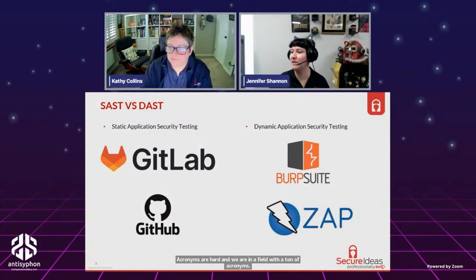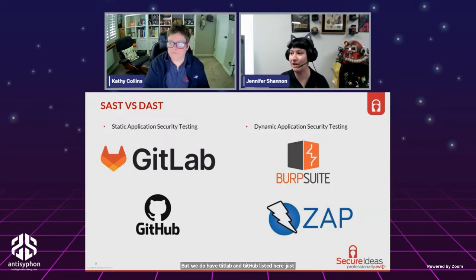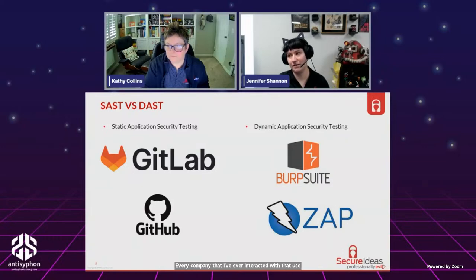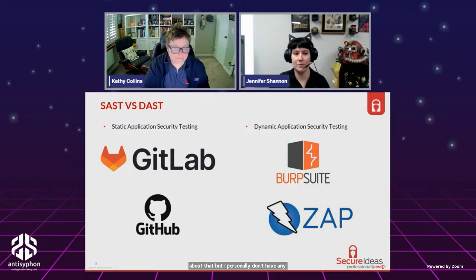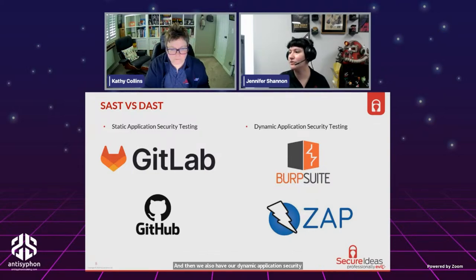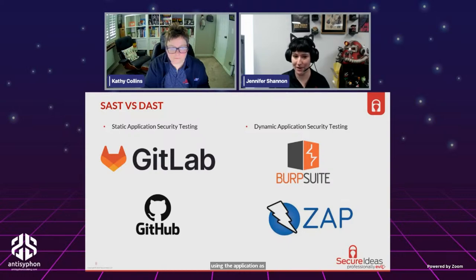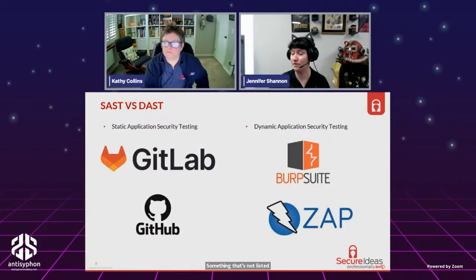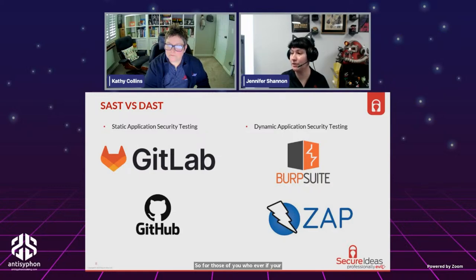We have GitLab and GitHub listed here because they're widely used, and every company I've interacted with that uses them for SAST has loved it. For Dynamic Application Security Testing, we've listed BurpSuite and Zap — we use the application as it's intended to be used while proxying all traffic through Zap.